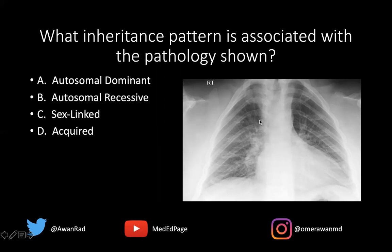Then we want to look at the bones. This is an MSK case, so we want to trace the ribs, make sure we don't have any rib fractures or rib lesions. We do that on the right side and along the left side — starting posterior, posterior lateral coming anterior. But sometimes the hardest thing about these types of cases is recognizing what's not there that's supposed to be there.